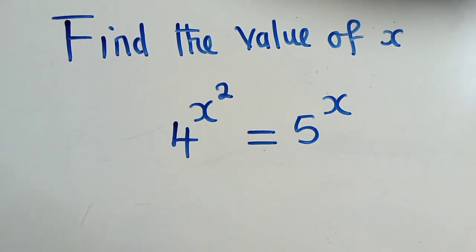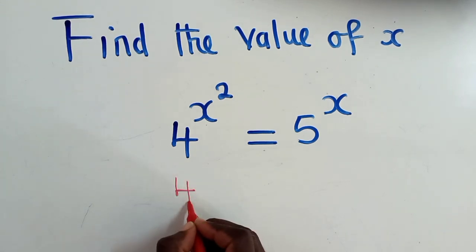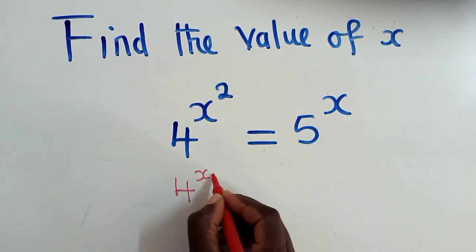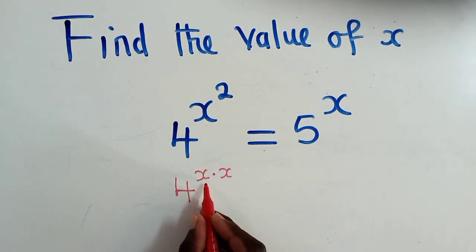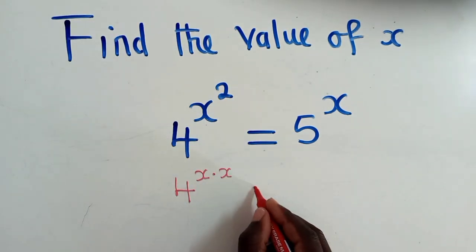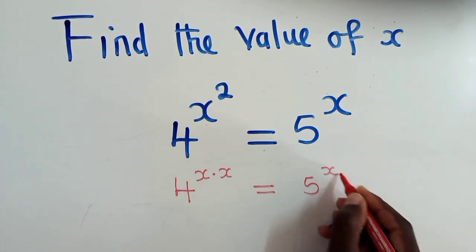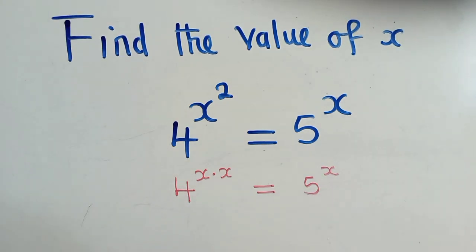To find the value of x right here, we need to be very smart. So can you see what I've written here? 4 to the power x times x is the same as what we have right here. So this is how we're going to write it. It's equal to 5 to the power x.